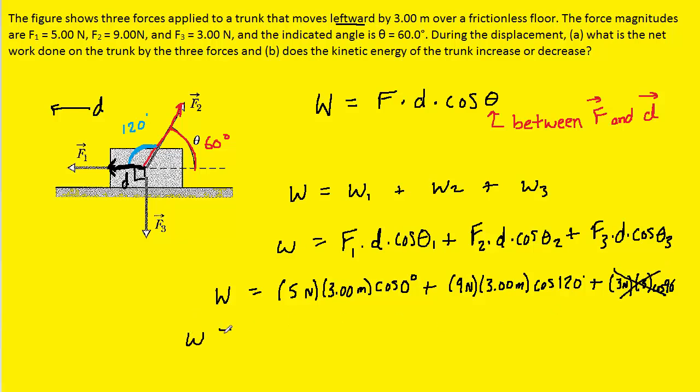So we can pick up our calculators, make sure they're in degree mode, and type in this expression plus this expression. And when we do that, we get 1.5. And the unit of work we can see will be a newton times a meter, which is also equivalent to 1.5 joules. So this is the correct answer to part A of the question.